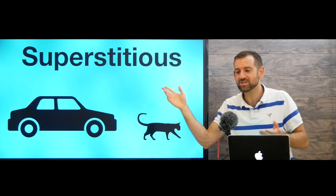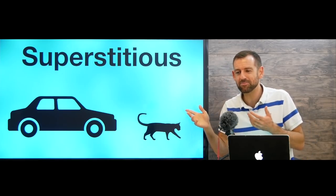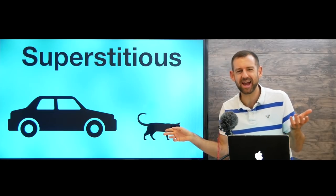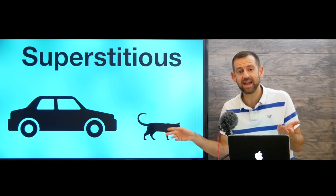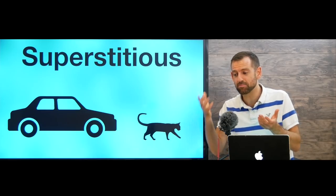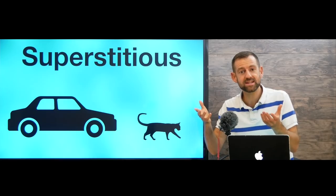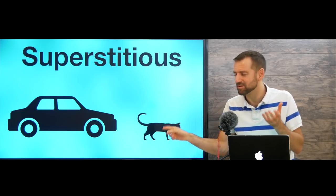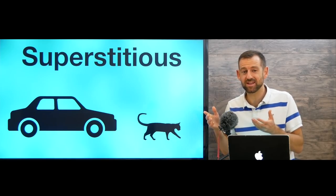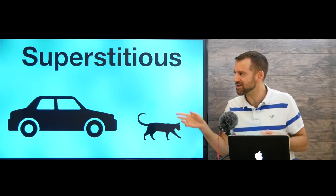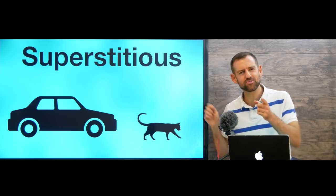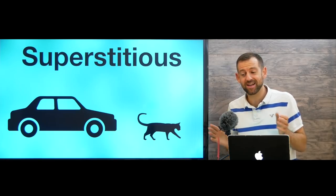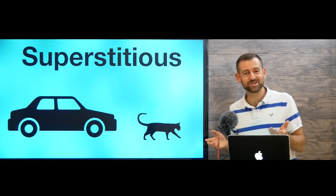Superstitious is when people believe in these kinds of things. Like a black cat — it's just a cat, right? What's the difference between a black cat and a white cat? Well, nothing. But superstitious people believe that a black cat is sort of evil. Are you superstitious? I'm not superstitious at all. I'm the least superstitious person in the world.